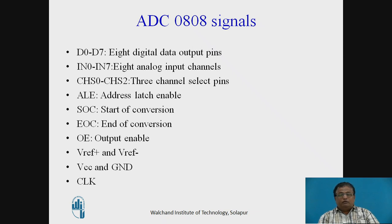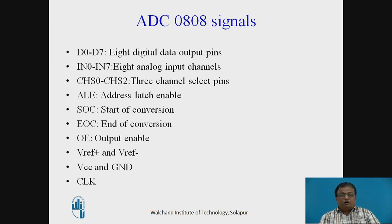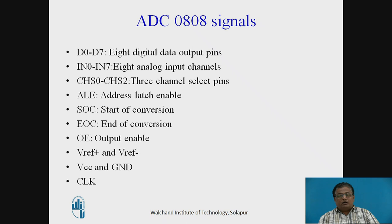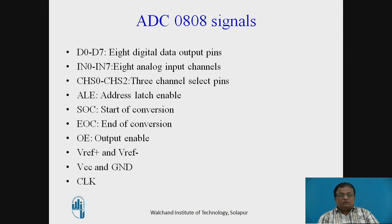ADC 0808 is called the 8-bit ADC because it produces an 8-bit digital output on pins D0 to D7. IN0 to IN7 are the 8 analog input channels through which one can apply the analog signal to the ADC. To select one of these 8 analog channels, 3 channel select lines are provided — CHS0 to CHS2 — using which one can select the appropriate analog input channel.